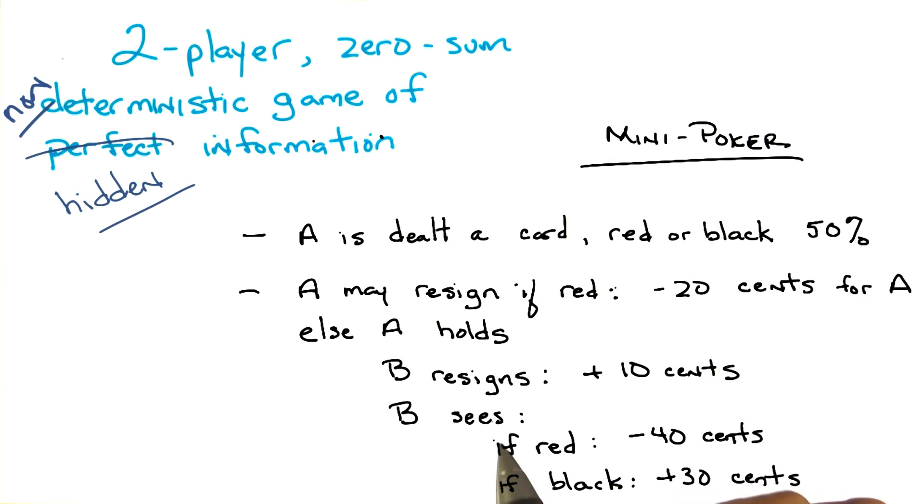Now, if B chooses to see the card, in fact demands to see the card, then if the card is red, then A loses 40 cents. But if the card is black, then A gets 30 cents. And since we're betting, this means that whatever A wins, B loses, and vice versa. That makes it zero sum.